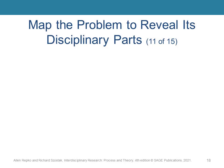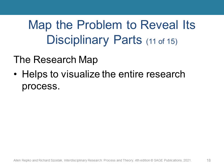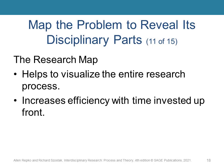Another type of map we might want to use in Step 3 is called the Research Map. It seeks to visualize the research process from beginning to end. By doing this upfront, we can save ourselves a lot of time later in the research process.